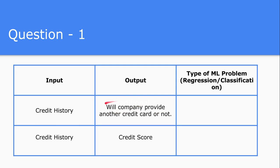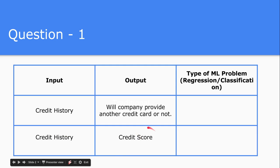The first output is: based on watching the credit history of an individual person, will the company provide another credit card or not? That is the first output, and you need to predict whether this type of problem is a regression problem or a classification problem. The second problem is: given the credit history of an individual person, you need to predict the credit score of that person as output. Pause the video and think about which category of supervised learning these problems lie in.